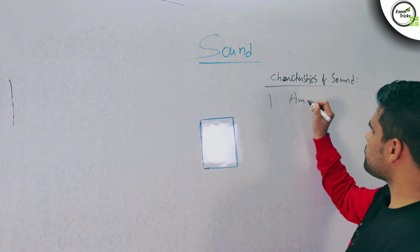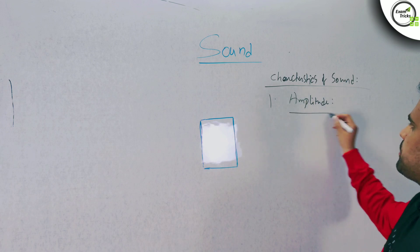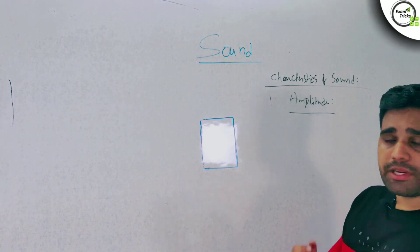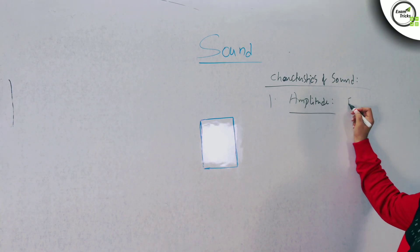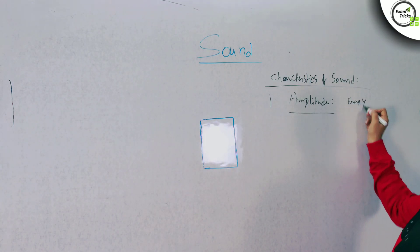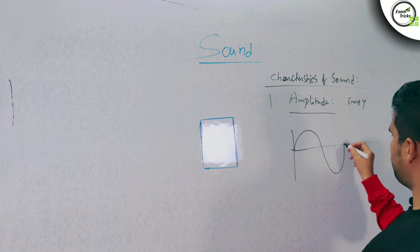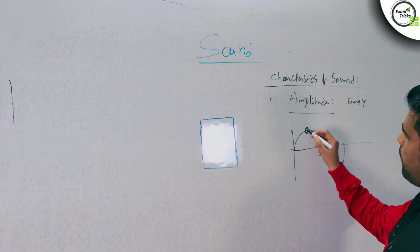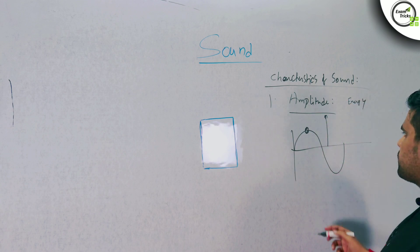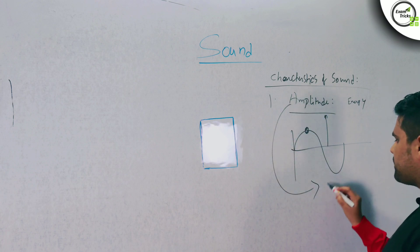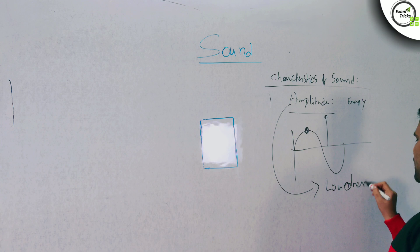Amplitude. Amplitude is nothing but the entire energy level — we are talking about the amount of energy. Looking at the wave, the maximum point is the height of the wave, and that height is the amplitude. The amount of amplitude depends on the amount of loudness, and the amount of loudness depends on the amount of amplitude.